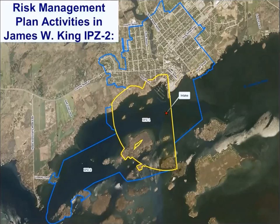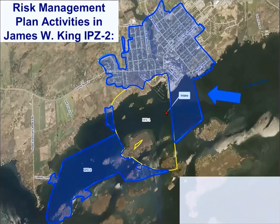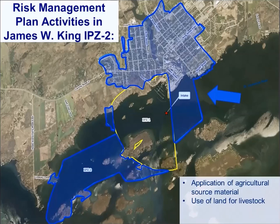In James W. King Intake Protection Zone 2, certain activities require the establishment of a risk management plan. Policy 7.5.1 in the Cataraqui Source Protection Plan requires risk management plans in James W. King Intake Protection Zone 2 for the following activities: the application of agricultural source material to land; the use of land as livestock grazing or pasturing, an outdoor confinement area or a farm animal yard; and the storage of agricultural source material. The risk management plan should be consistent with regulations and agriculture best management practices, and recognize existing best management practices.